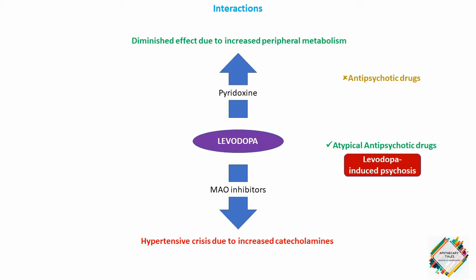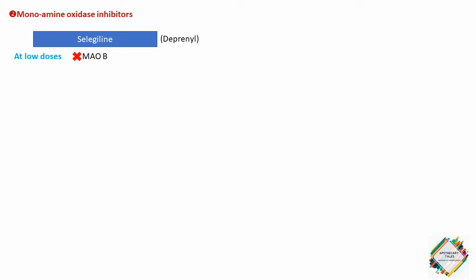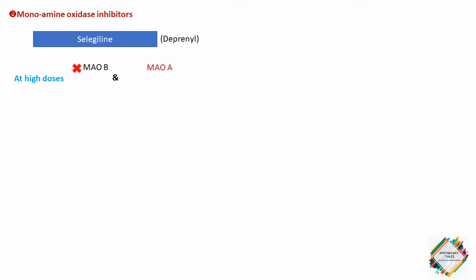Next we are going to talk about the monoamine oxidase inhibitors used in the treatment of Parkinson's disease — selegiline and rasagiline. Selegiline, also called deprenyl, selectively inhibits monoamine oxidase type B, which is responsible for the metabolism of dopamine at low to moderate doses. It does not inhibit MAO type A, which is responsible for metabolizing norepinephrine and serotonin, unless given above recommended doses where it loses its selectivity.